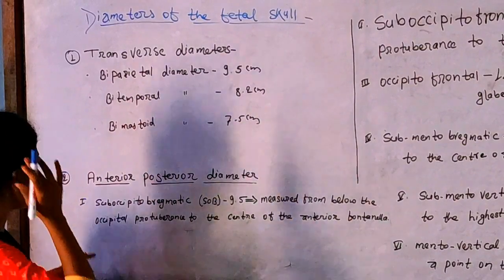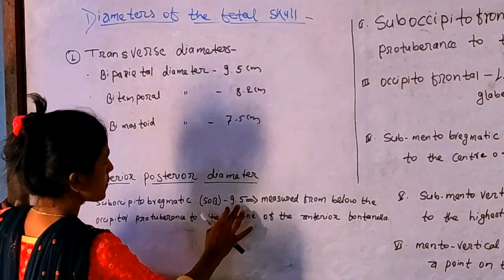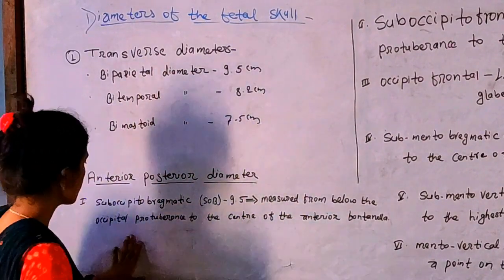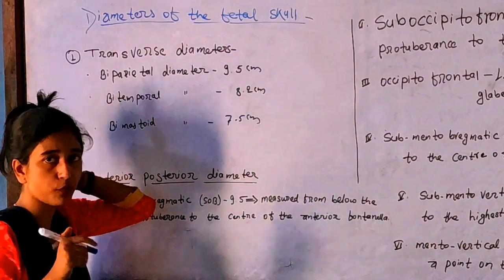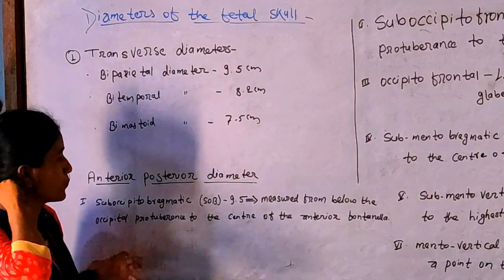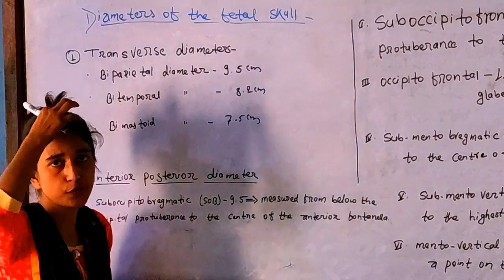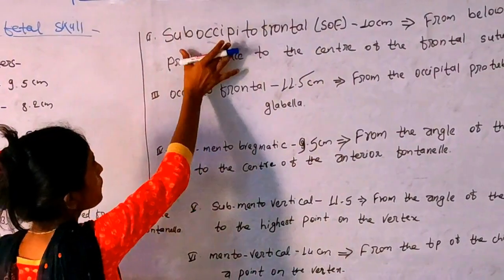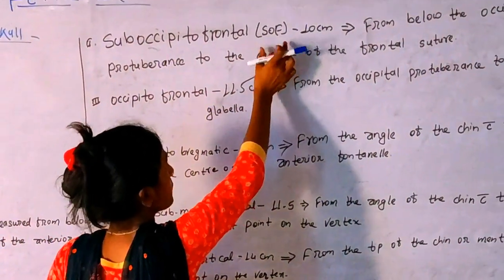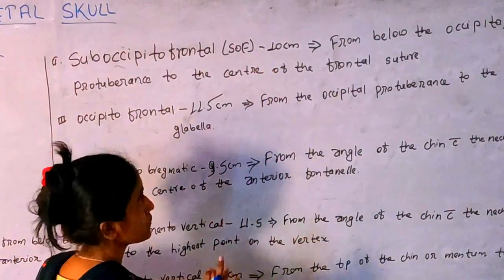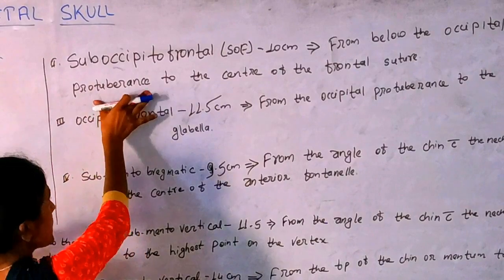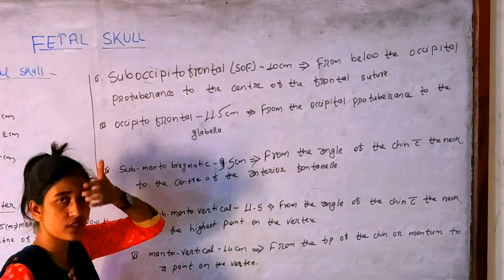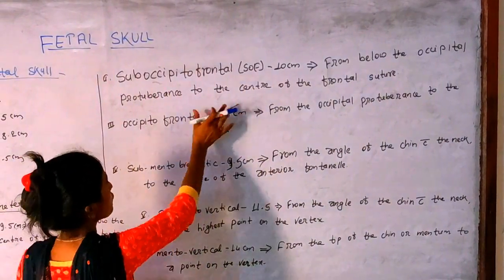To recap the anteroposterior diameters: the suboccipitobregmatic is 9.5 cm; the suboccipitofrontal is 10 cm; the occipitofrontal, from the occipital protuberance to the center of the frontal suture, is also 10 cm. The occipitofrontal with glabella measurement is 11.5 cm.